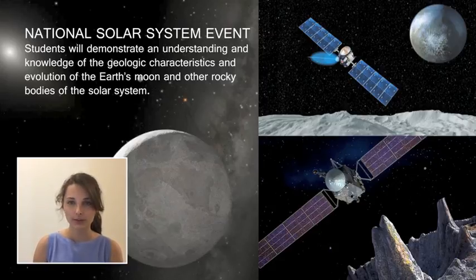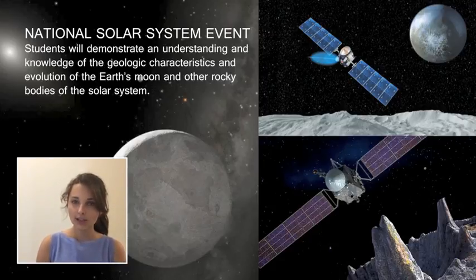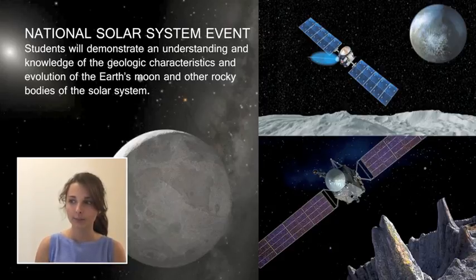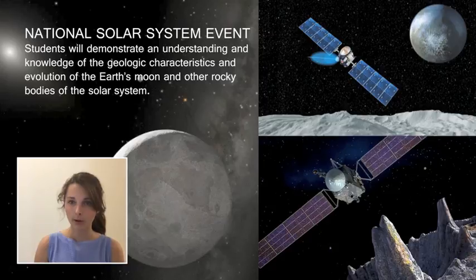The focus of this year's Solar System event is Earth, Moon, and other rocky bodies, particularly in the outer Solar System. Each team may bring two 8.5 by 11 inch two-sided pieces of paper containing information in any form from any source for use during competition. The notes may be used during all parts of the event. No calculators will be allowed for this event.